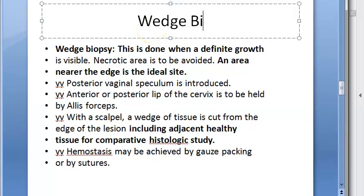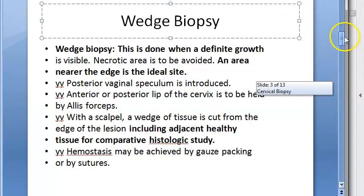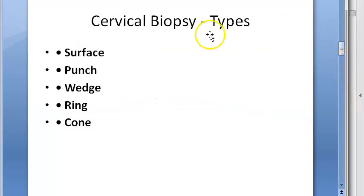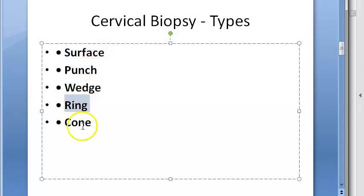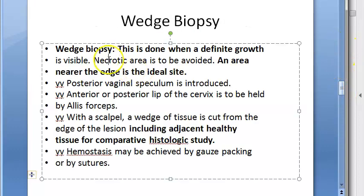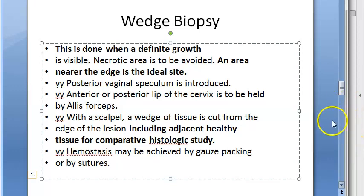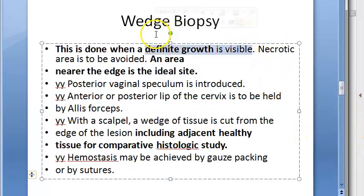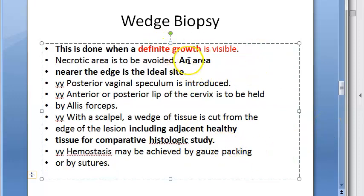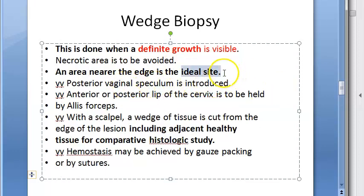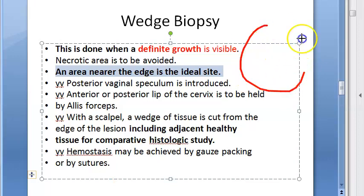Now let us move to wedge biopsy. Wedge biopsy is done when a definitive growth is visible on the cervix. The necrotic area should be avoided; an area near the edge of the growth is the ideal site for biopsy.